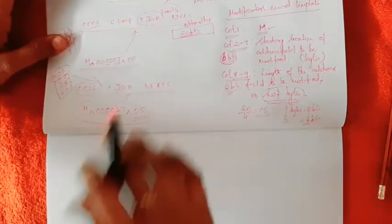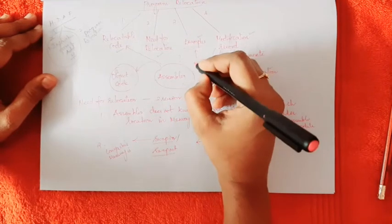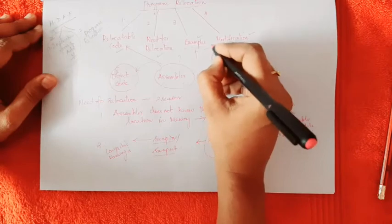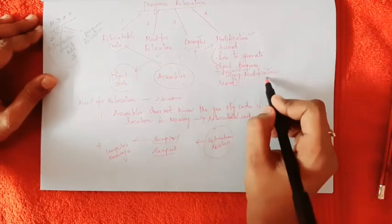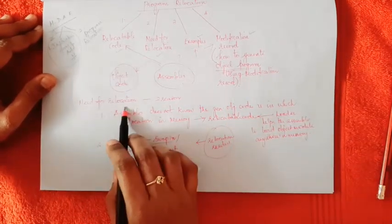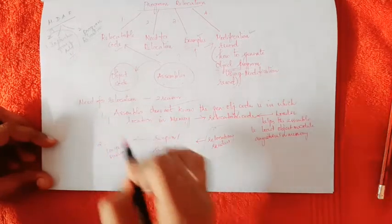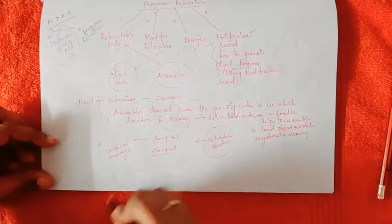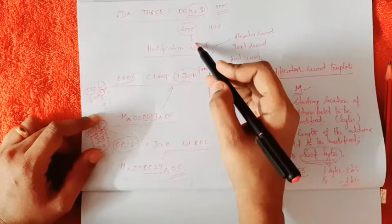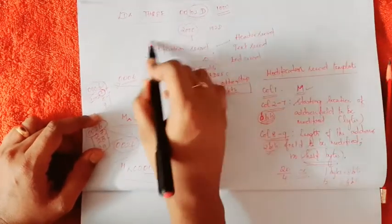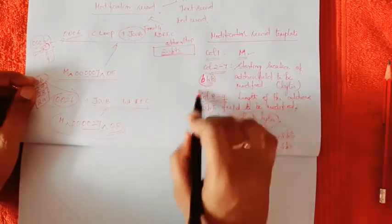We have now studied program relocation, covering relocatable code, the need for relocation, and examples showing what happens when we move a program from one location to another. We need a modification record to identify and generate the correct object program. The two reasons for needing relocation are: the assembler does not know where the object code is in memory, and when memory is full we use swap in and swap out. The modification record template uses M in column 1, the starting address of the field in column 2, and the length of the address field in column 3.